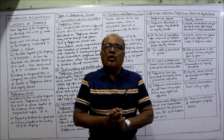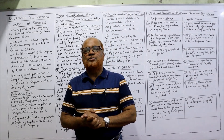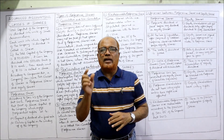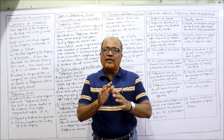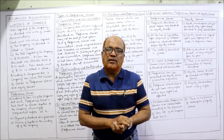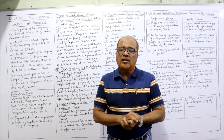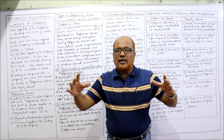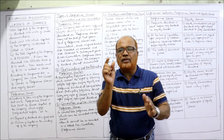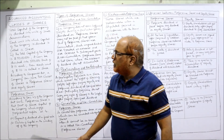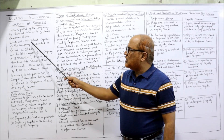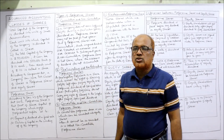First of all, we'll learn about the meaning of the term 'share.' The capital of a company is divided into a number of small parts of equal denomination. Each such part of the capital is called a share. So the total capital of a company is divided into units of small denomination, and each unit into which capital is divided is called a share.